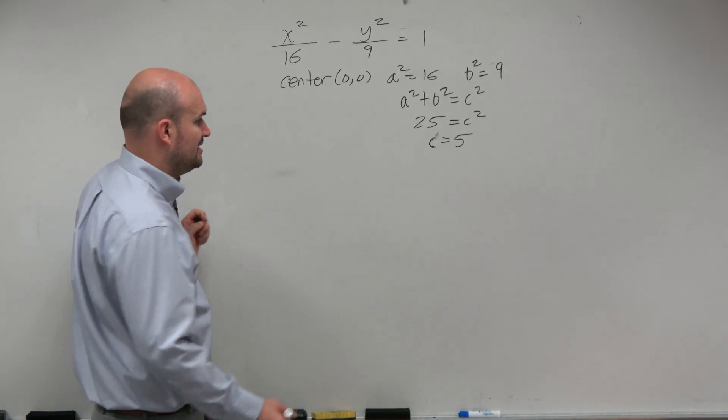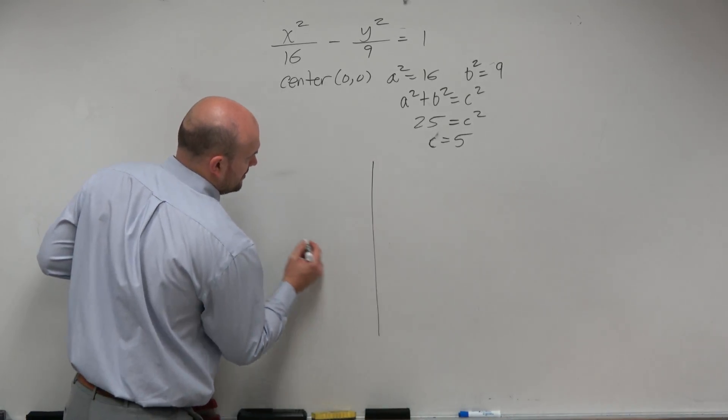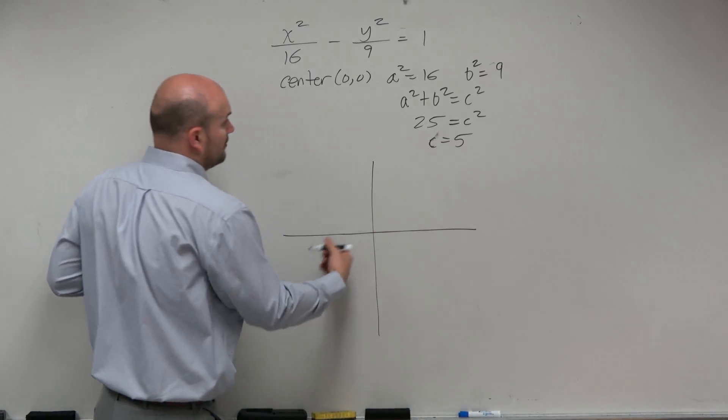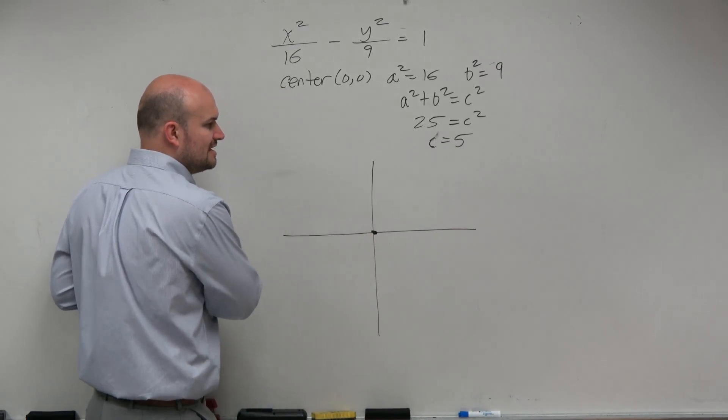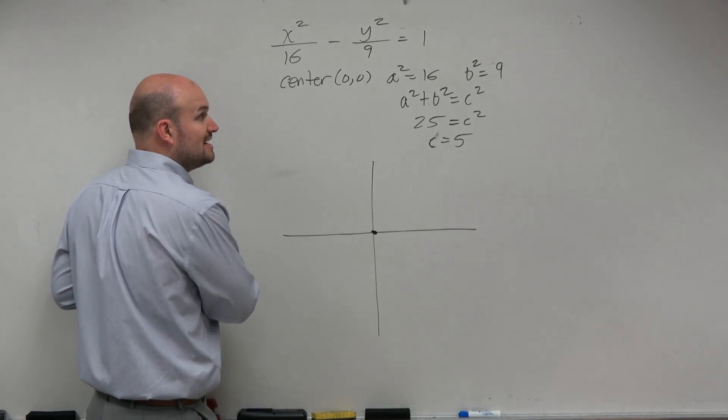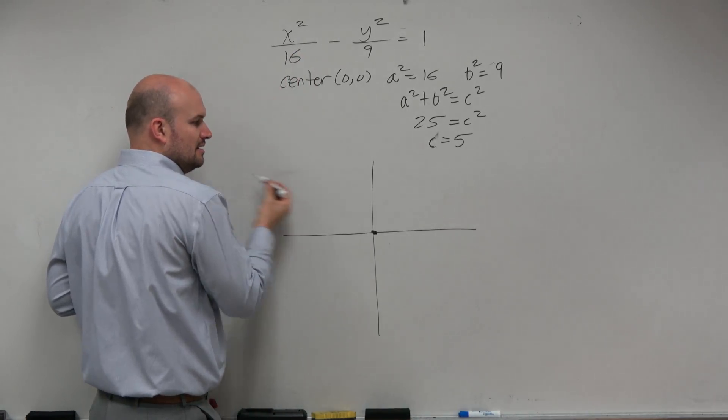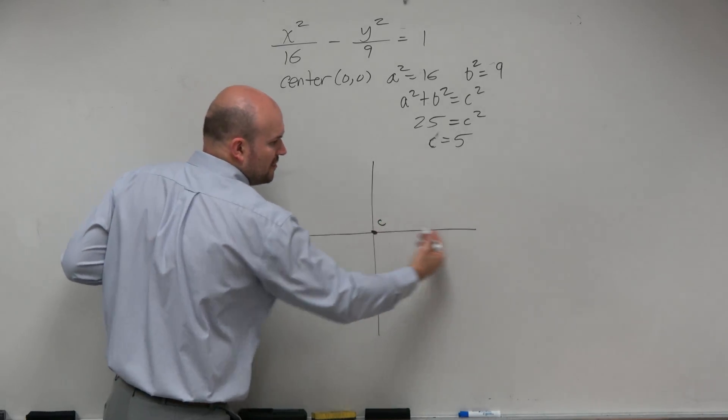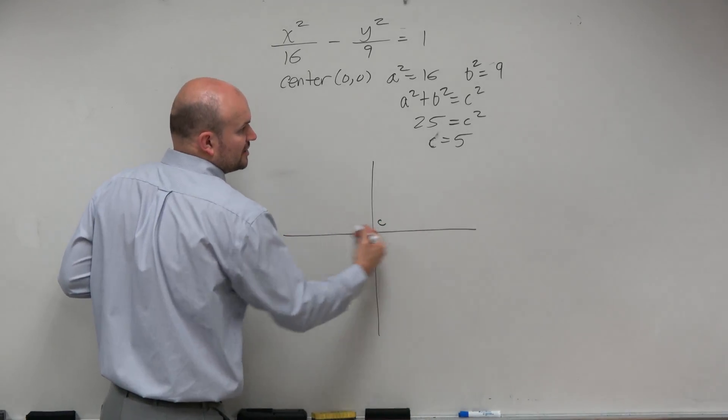So now this is not too bad. We can figure this one out. We're at 0, 0. Now is my transverse axis horizontal or vertical? Horizontal because a squared is under x, right? So if this is my center, that means my foci and my vertices are going to go left and right.